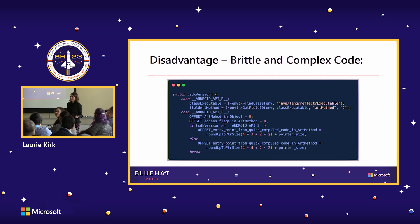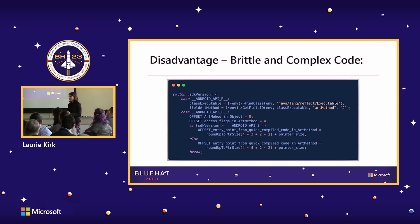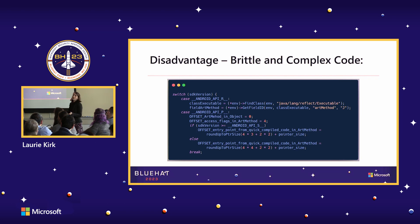You might wonder why everyone doesn't use runtime-based obfuscation. The primary reason is that it creates very brittle, complex code. Android has many different API versions, so you have to perform pointer arithmetic to find offsets to different objects for every single API version — resulting in a giant if or switch statement checking for API version 28, 27, etc., and calculating pointers accordingly. The example shown of hooking the ART method object is very complicated to read and even more complicated to write.